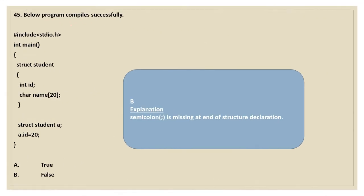Moving on to the next question — does the below program compile successfully or not? hash include stdio.h, int main, open curly. Here we have the structure declaration and definition. Structure student, open curly, int id, char name of 20, close curly. Structure student A declared outside the structure. A dot id equals 20, close curly. One thing you have to note is that the structure is missing a semicolon. Once the structure ends, it should have a semicolon — that is our syntax. Since it is missing, it is not going to compile successfully. The result is B — false — because the semicolon is missing.